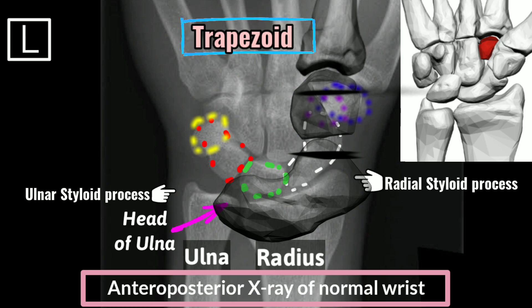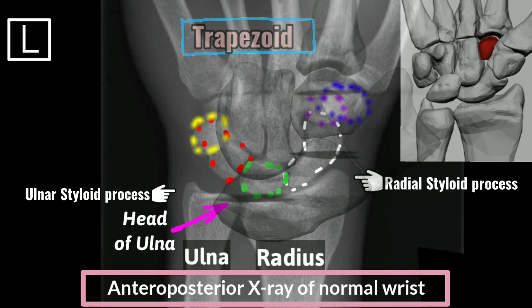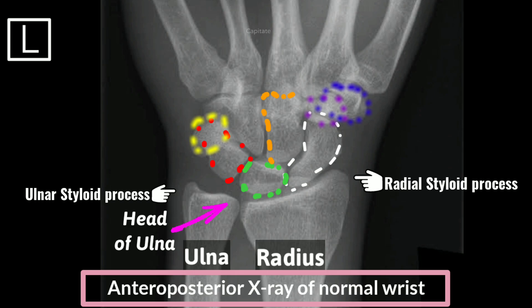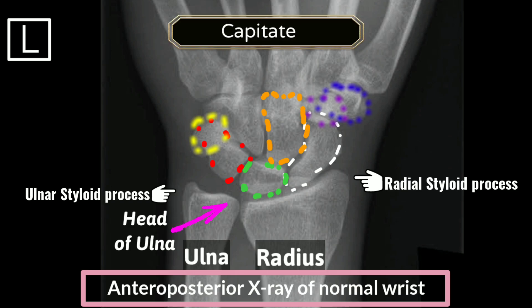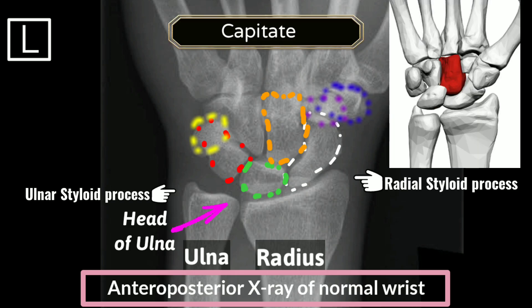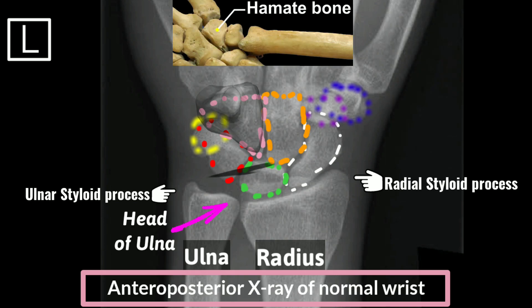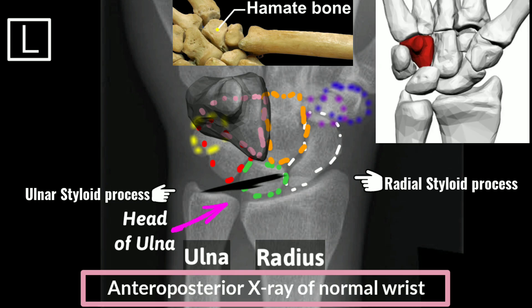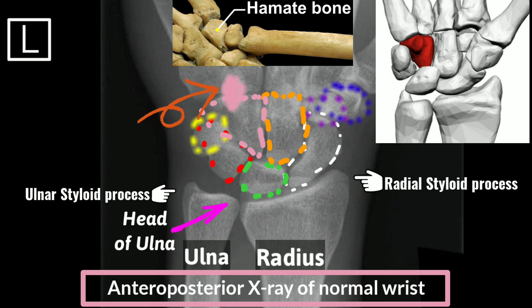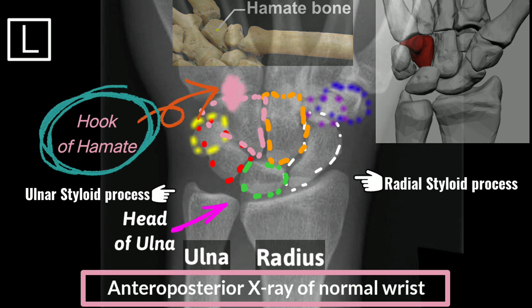The largest carpal, the capitate bone, is found in the center of the carpal bone region. It articulates with the third metacarpal bone — the middle finger — forming the third carpometacarpal joint. The hamate is an irregular carpal that abuts the metacarpals of the little finger and ring finger. It is distinguishable by its wedge shape and a hook-like process projecting from its palmar surface, called the hook of hamate.